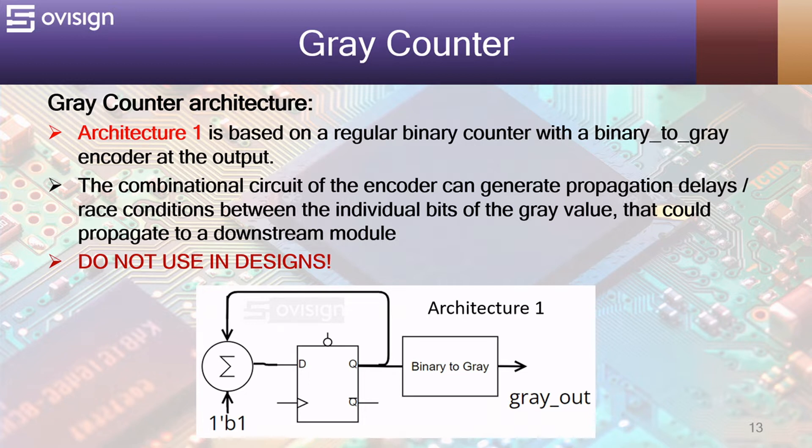The combinational circuit of the decoder can generate propagation delays or race conditions between the individual bits of the gray value that could propagate to a downstream module as noise. This architecture is not recommended to be used in designs.